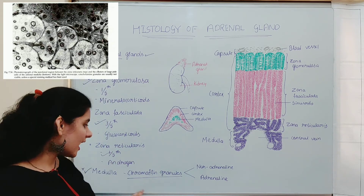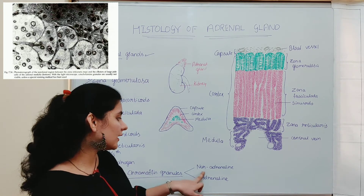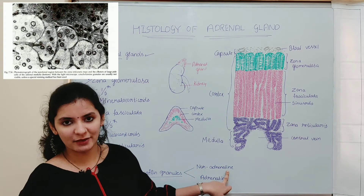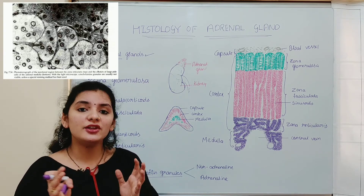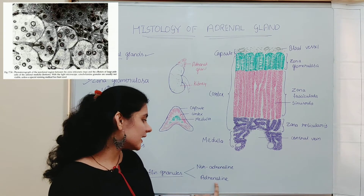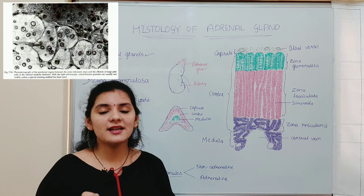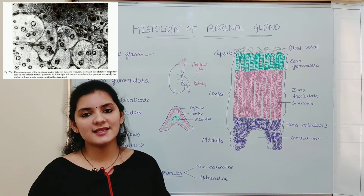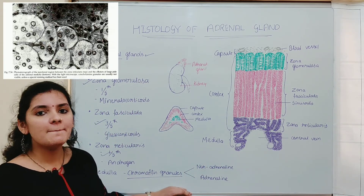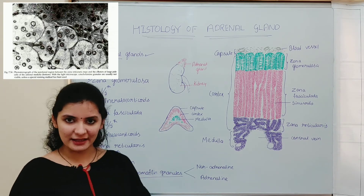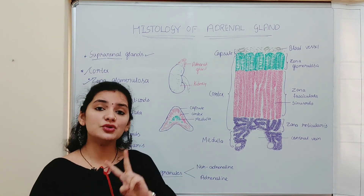Among the chromaffin cells, some have electron-dense chromaffin granules and produce the hormone noradrenaline (norepinephrine), while others have less dense granules and produce adrenaline (epinephrine). Noradrenaline and adrenaline are known as the fight-or-flight hormones, produced during anxiety or stress conditions. The type of hormone produced depends on the density of the chromaffin granules.